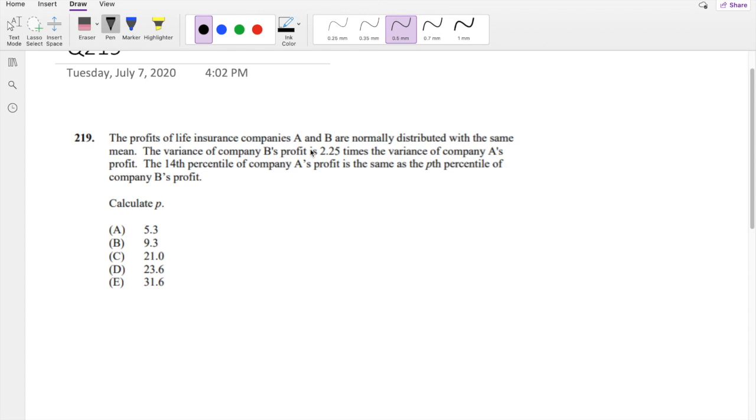The profits of life insurance companies A and B are normally distributed with the same mean. So mean of A is equal to mean of B, which I'm just going to call mean. The variance of company B's profit is 2.25 times the variance of company A's profit. The 14th percentile of company A's profit is the same, so they're saying 14th percentile, wherever that may be, this is like 14%.